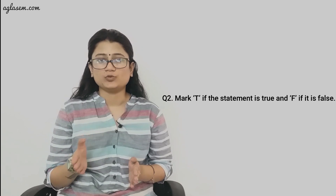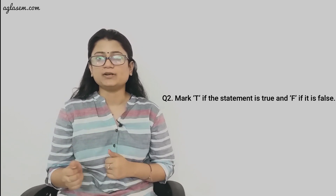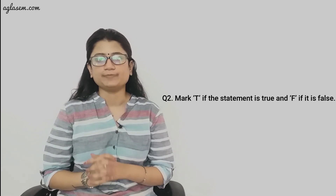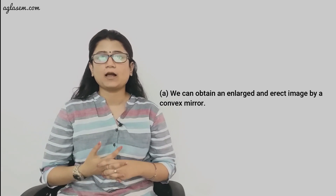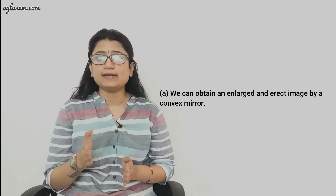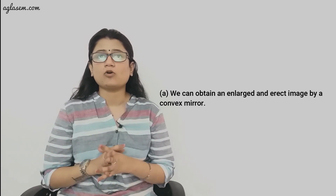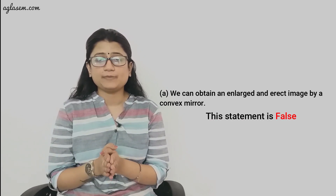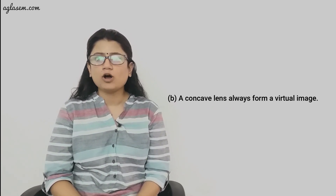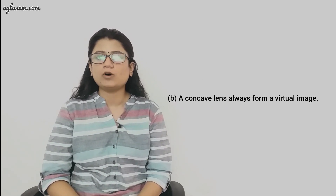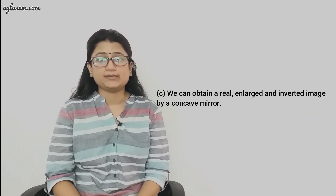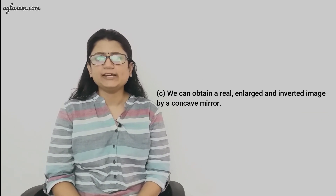Question 2: Mark T if the statement is true and F if the statement is false. Part (a): We can obtain an enlarged and erect image by a convex mirror — this statement is False. Part (b): A concave lens always forms a virtual image — this statement is True.